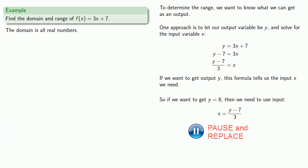So if we want to get an output y equals 8, then we need to use an input that will be computed by our formula when y is equal to 8. So we'll substitute. And that tells us if x equals 1 third, we'll get a value of 8. Or if we want to get y equals negative 3, we need to use the input minus 10 thirds.